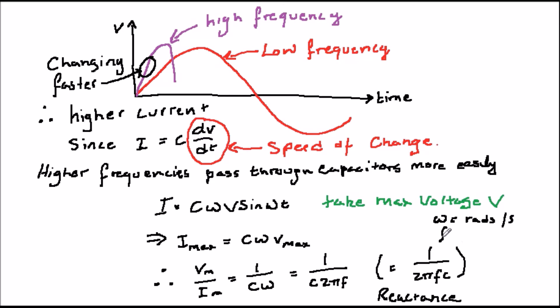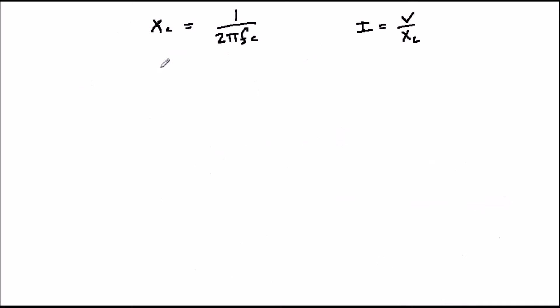However, a capacitor does it by charging up and then returning its charge or energy back to the source, so it doesn't get hot and it doesn't waste energy by dissipating it as heat. Because of these two important differences, this opposition to current is not called resistance. Instead, it has its own special name, reactance, and is given the symbol X.